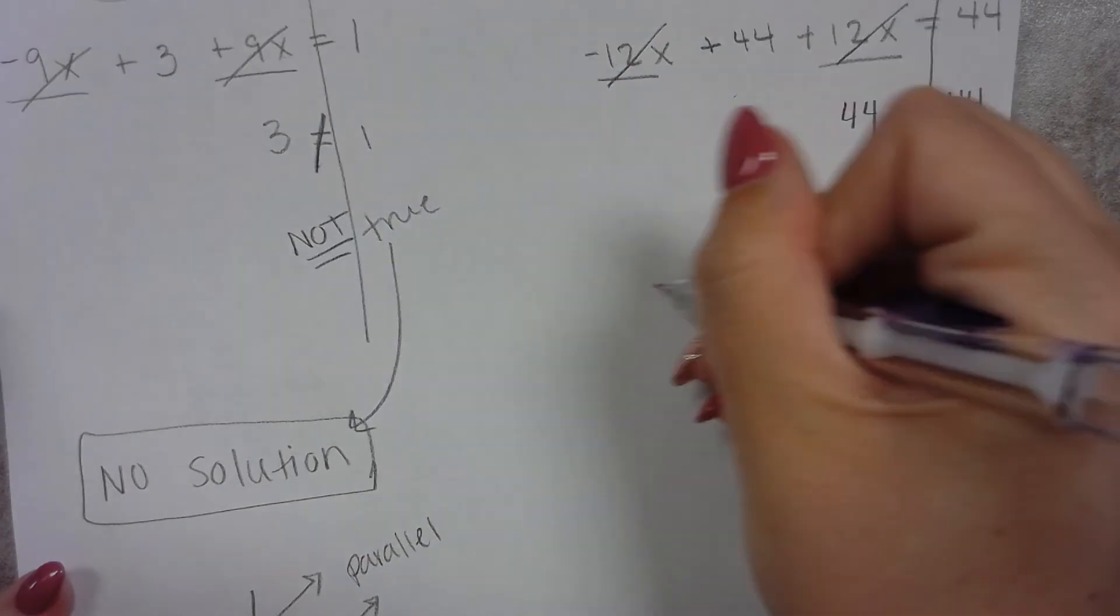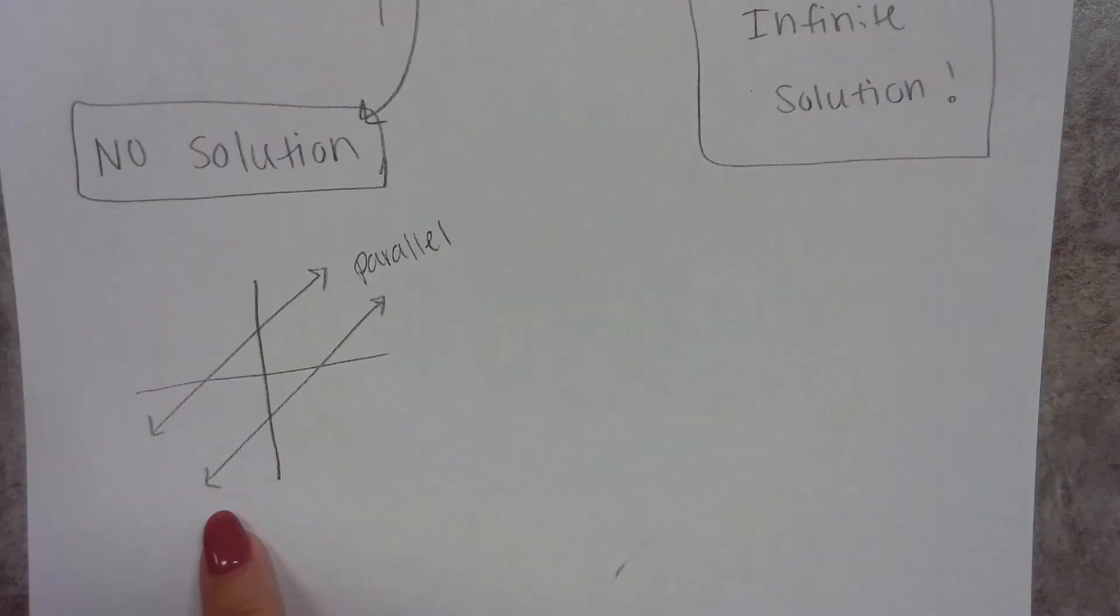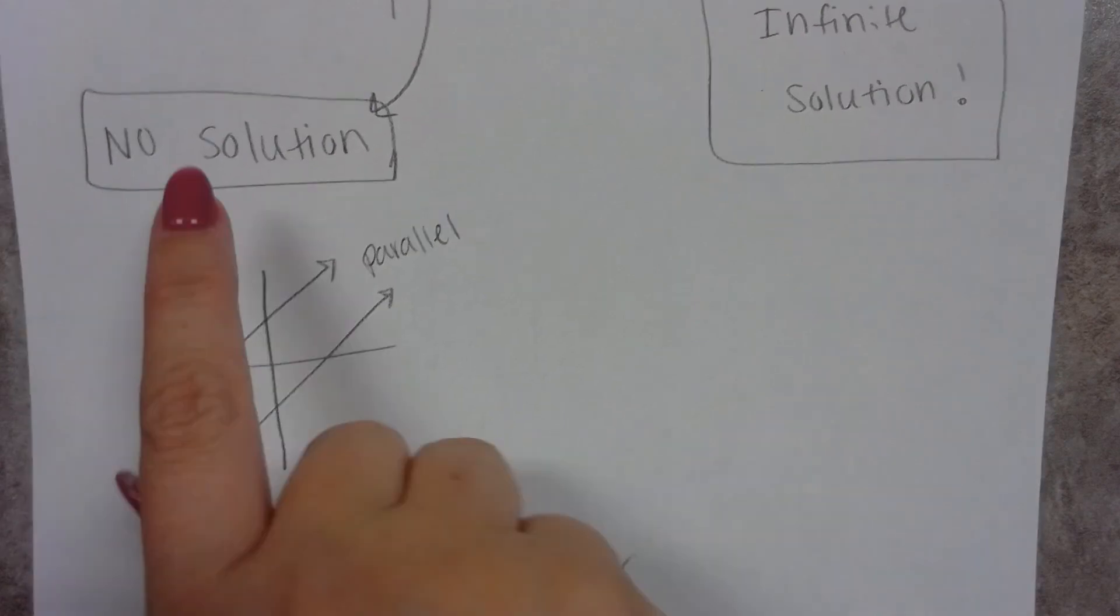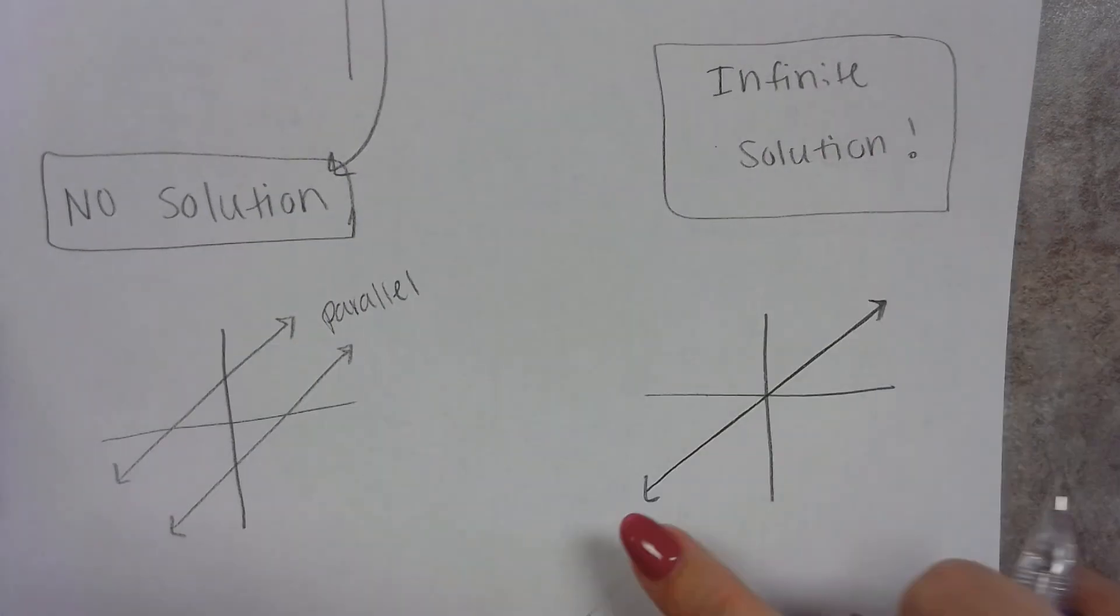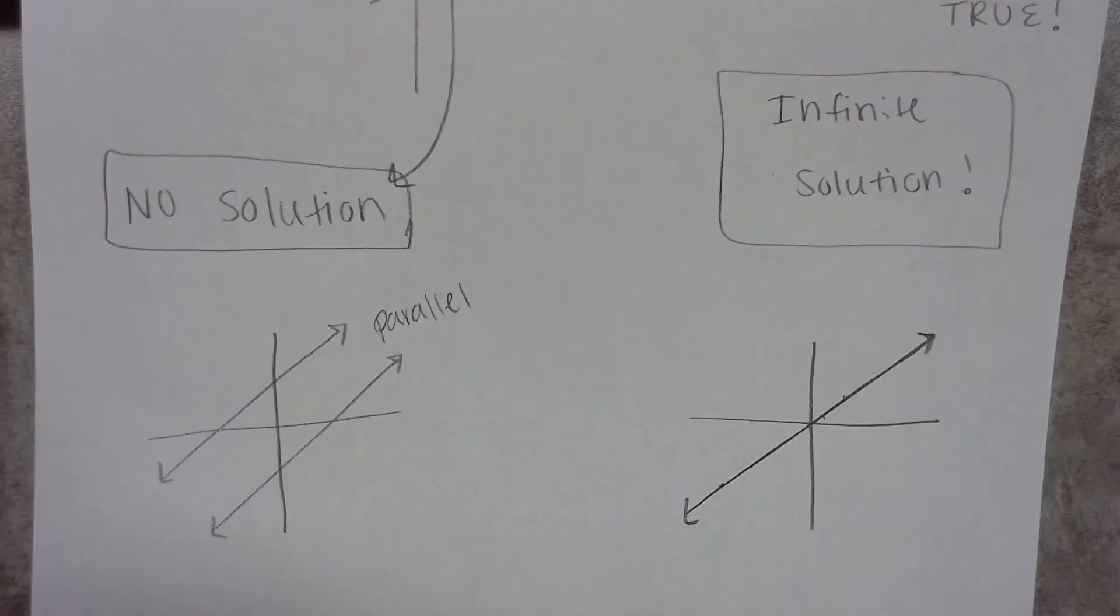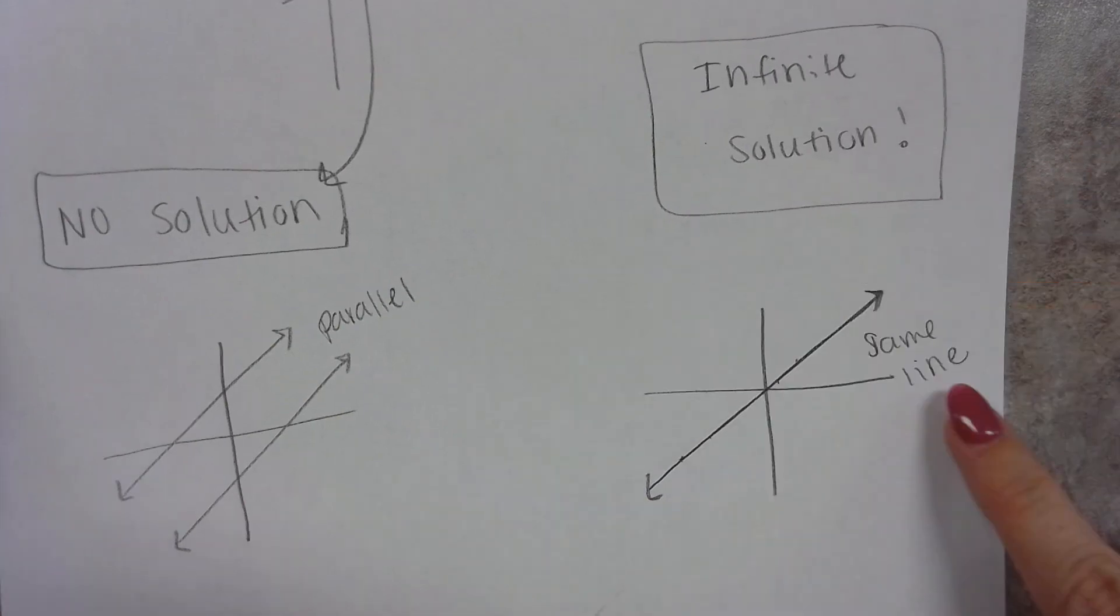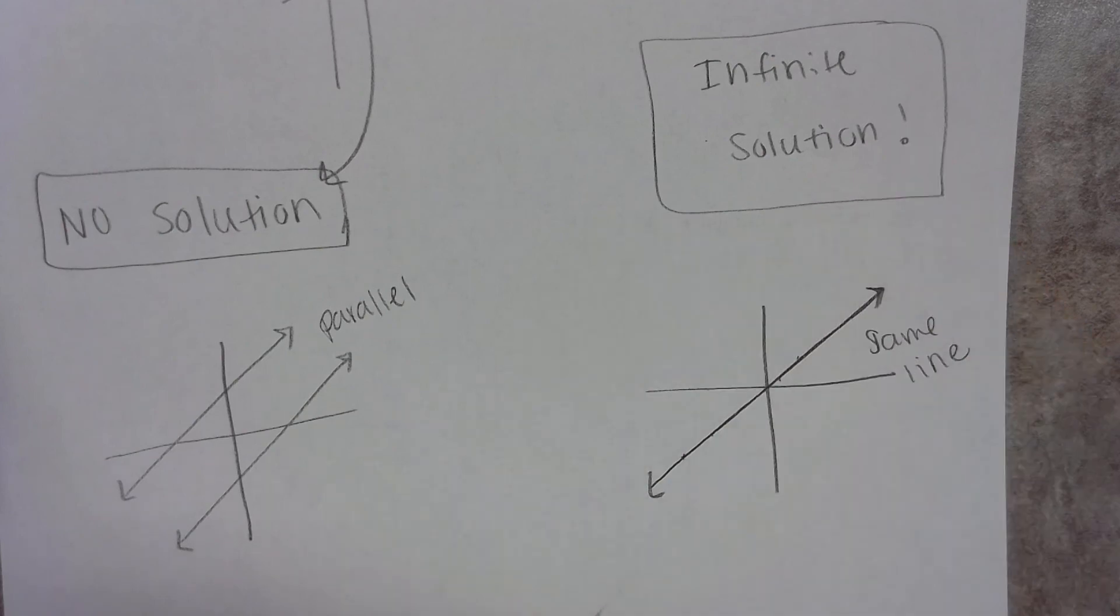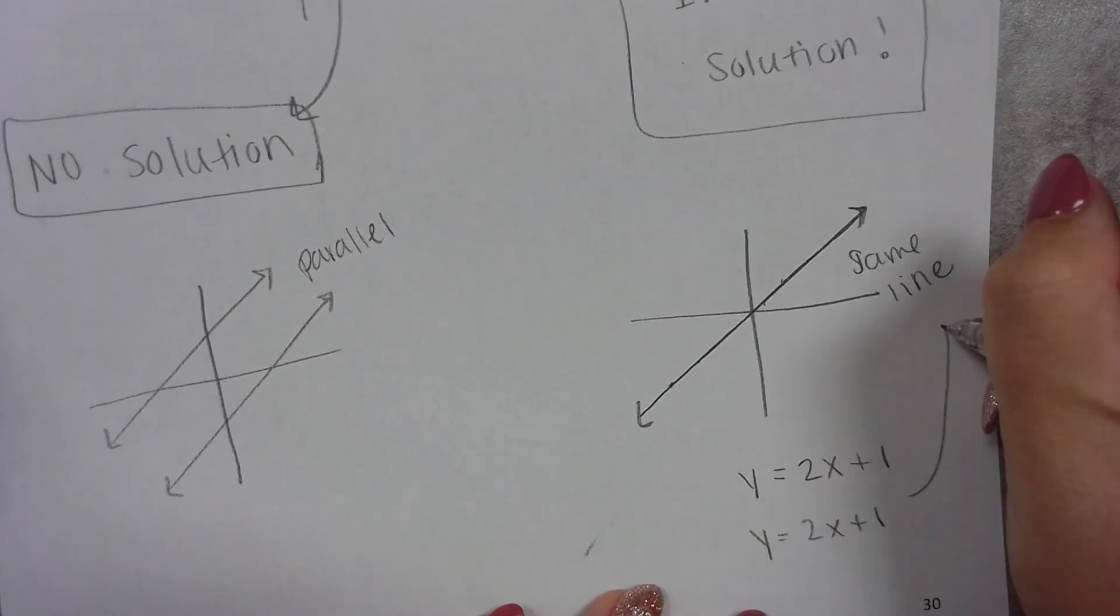What that means is that every single solution that you could think of, every single ordered pair is going to make this true. So essentially in this problem, remember we're looking for where do they cross? So if they never cross, then that means they're parallel. This is saying they always cross, which means our lines are the same. One line is graphed right on top of the other one. So every single point that you could possibly think of on this point is going to work. So there's the same line. So if they're exactly the same, then it has infinitely solutions. Infinitely many. So for example, if I gave you y equals 2x plus 1 and y equals 2x plus 1, they're the same line. So they would have infinite solutions.